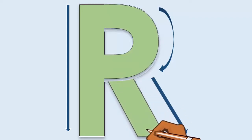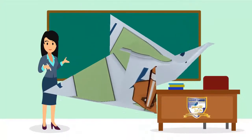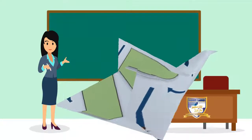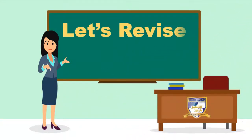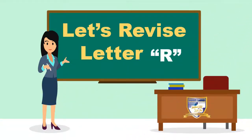After that, make a small left slanting line and attach it to the right curl. Now practice it repeatedly at your home so that you learn the character writing order of the letter R well.